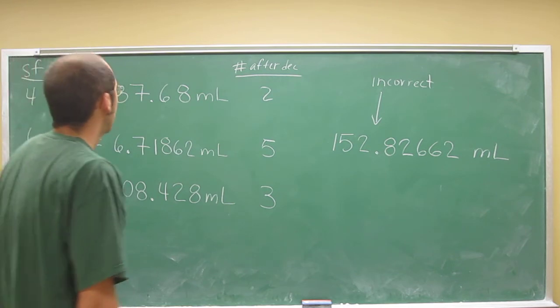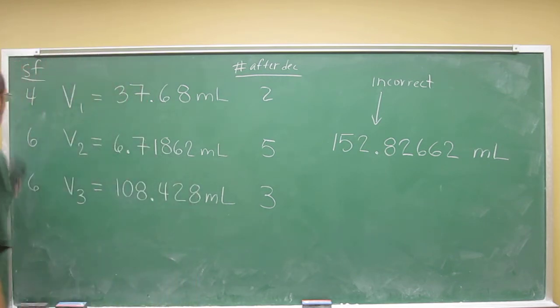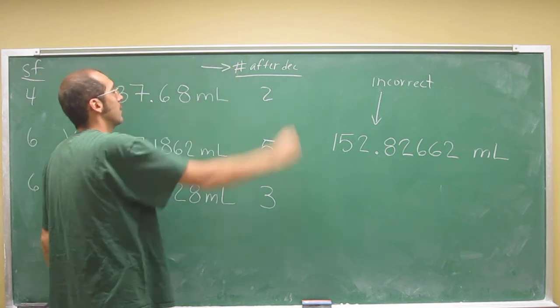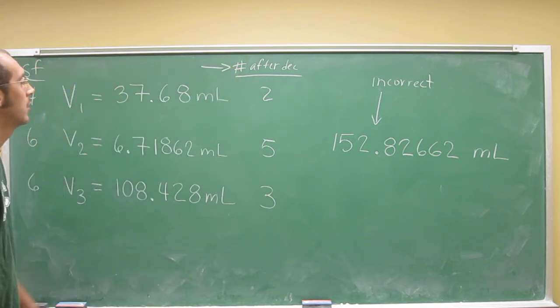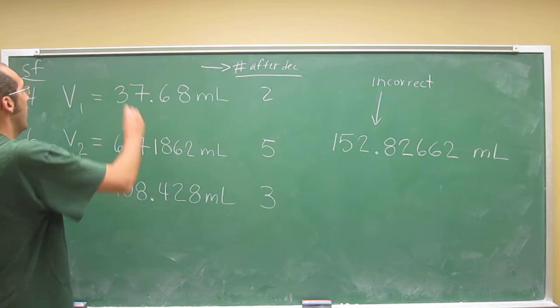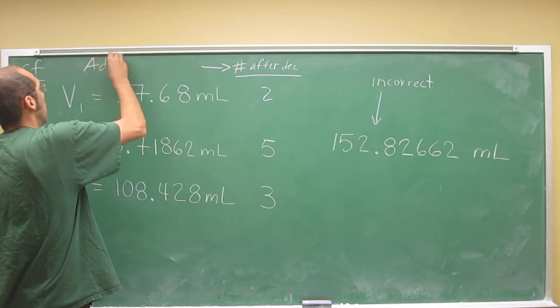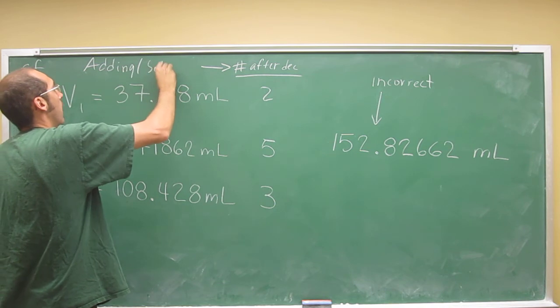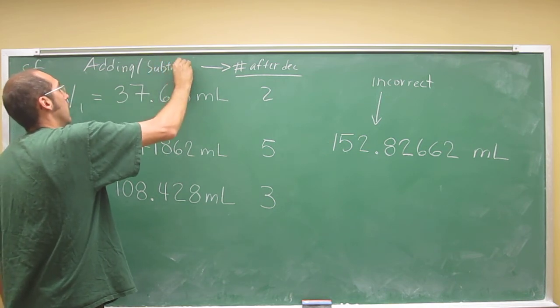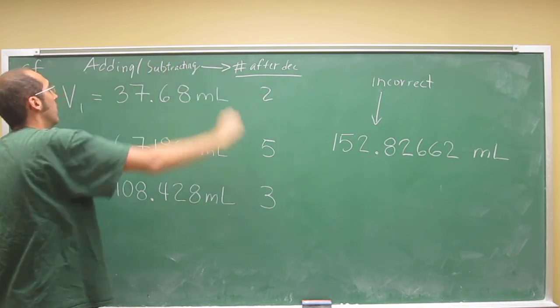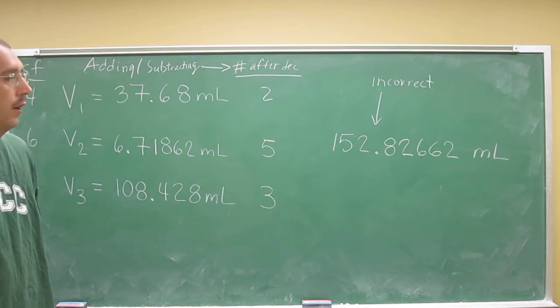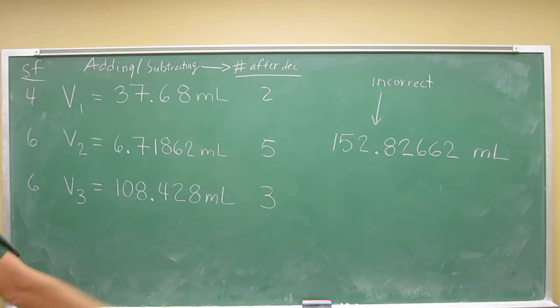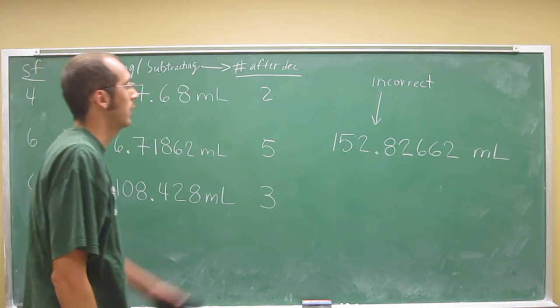Anyways, remember what you're going to do is not really so much worry about the number of sig figs, but you're going to worry when you're adding and subtracting how many numbers after the decimal. So this is for adding and subtracting. And we'll do another one, the other example for multiplying and dividing in a second.